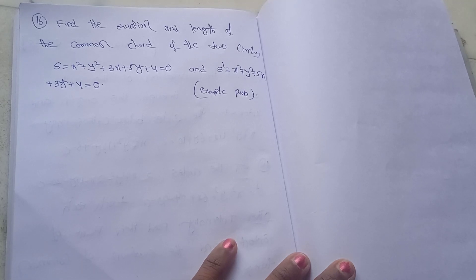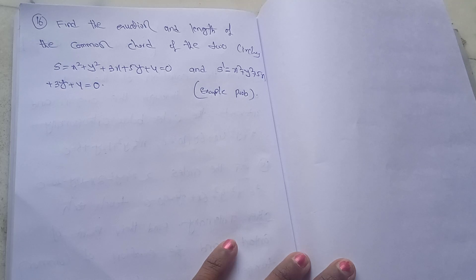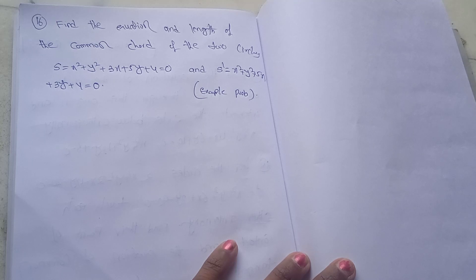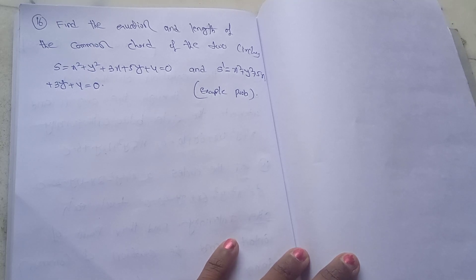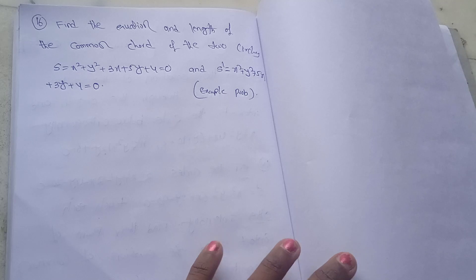Next, find the equation and length of the common chord of the two circles: S = x² + y² + 3x + 5y + 4 = 0 and S' = x² + y² + 5x + 3y + 4 = 0. This is an example problem.